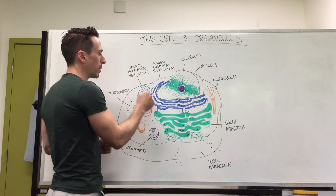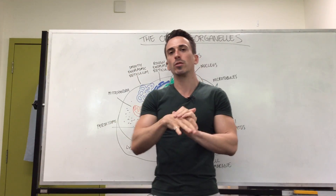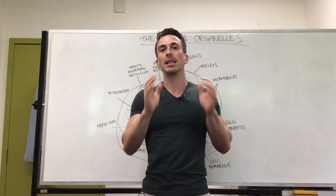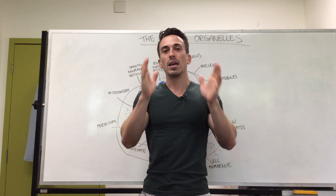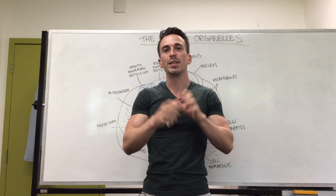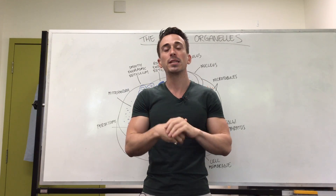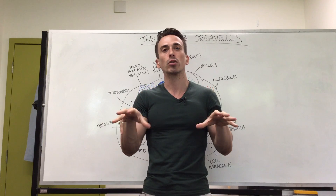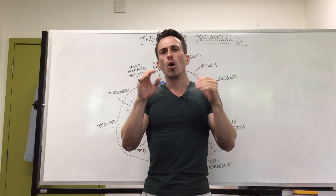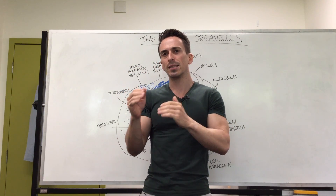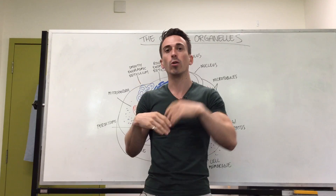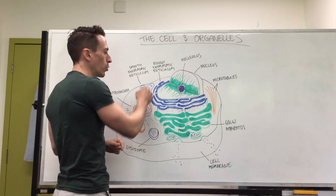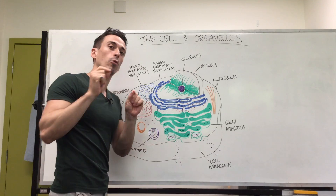The smooth endoplasmic reticulum doesn't have ribosomes on it, which means it doesn't make proteins, but what it does make are lipids — these are fats. It also plays a really important role in detoxification, meaning it can take drugs and other certain compounds and break them down. One of the organs of our body that does this as its primary role is the liver, which means the liver has huge amounts of smooth endoplasmic reticulum.